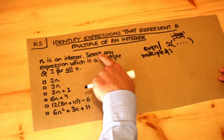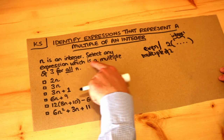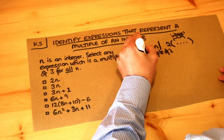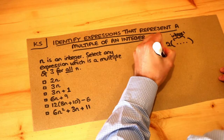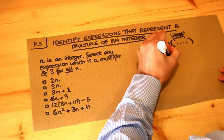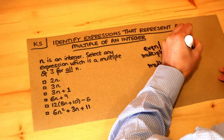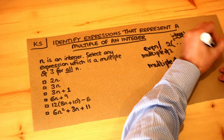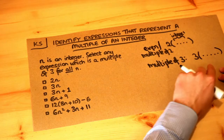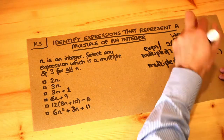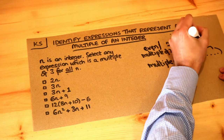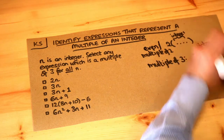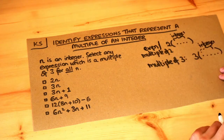If for example we wanted to show that an expression is a multiple of three for all n, a multiple of three is going to be three times some expression in brackets, where that expression is going to be an integer — because three times any whole number will be a multiple of three.